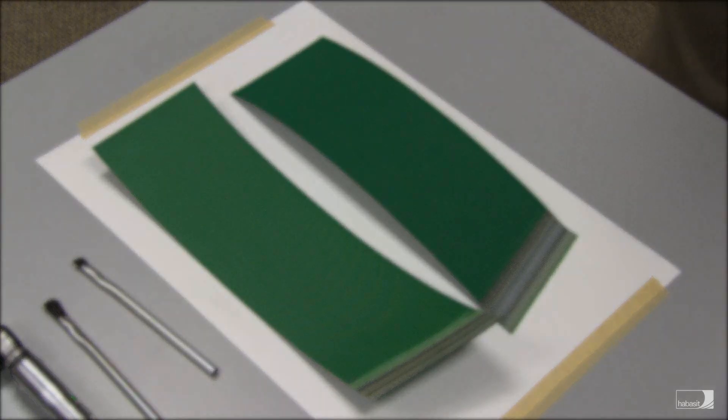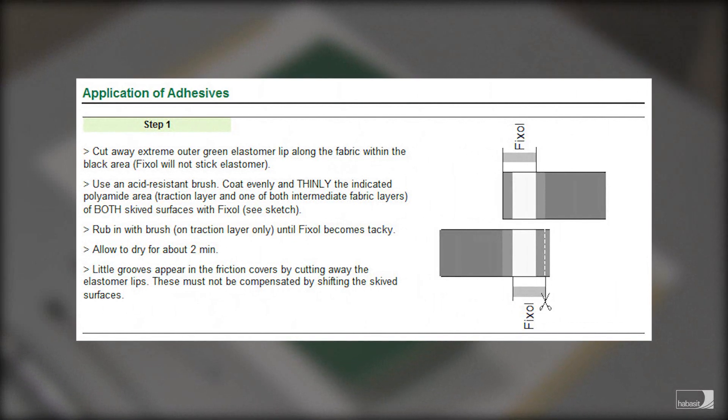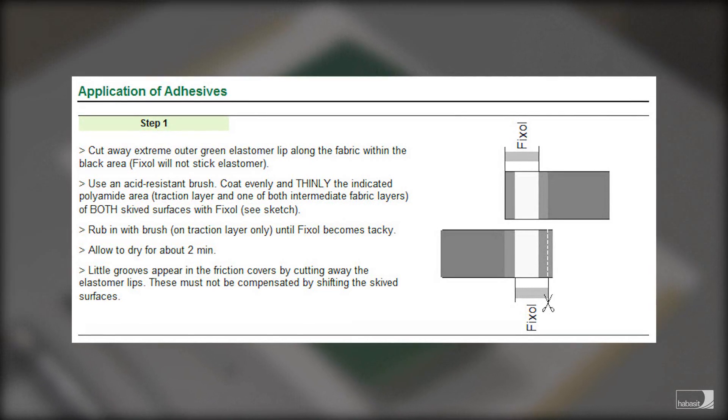The second page of the joining data sheet starts with a diagram and explanation of how and where to apply the Fix-All adhesive, which is the adhesive that's going to be used to join this belt.